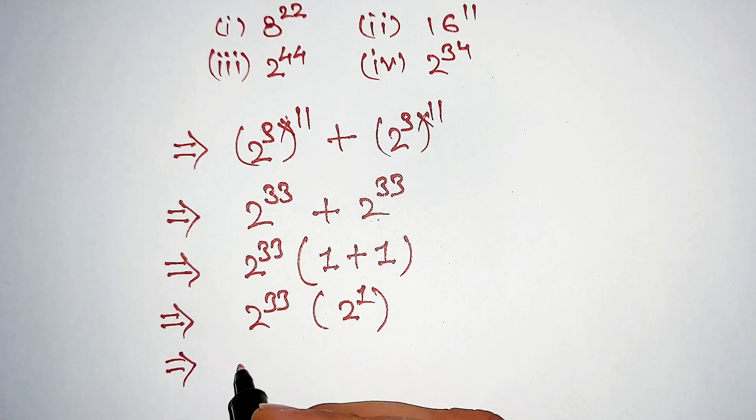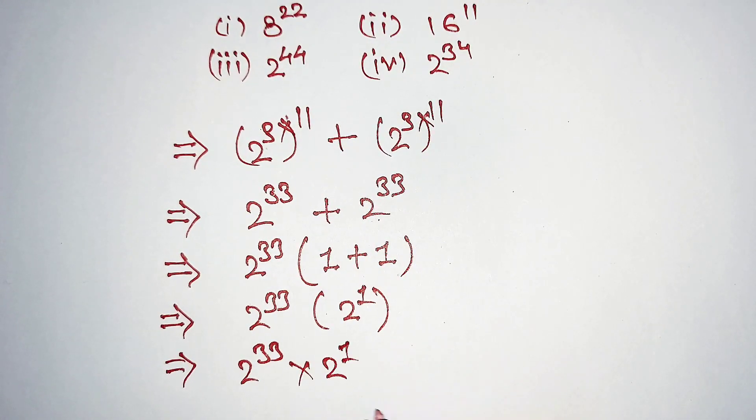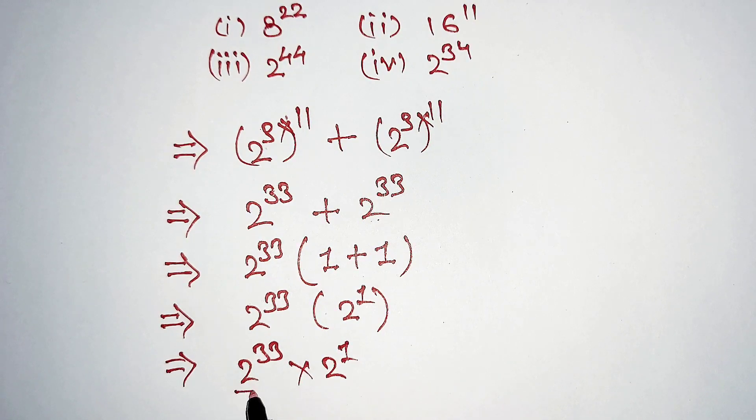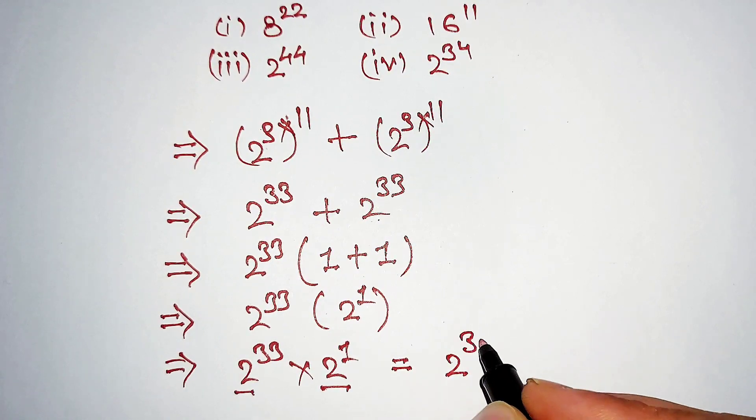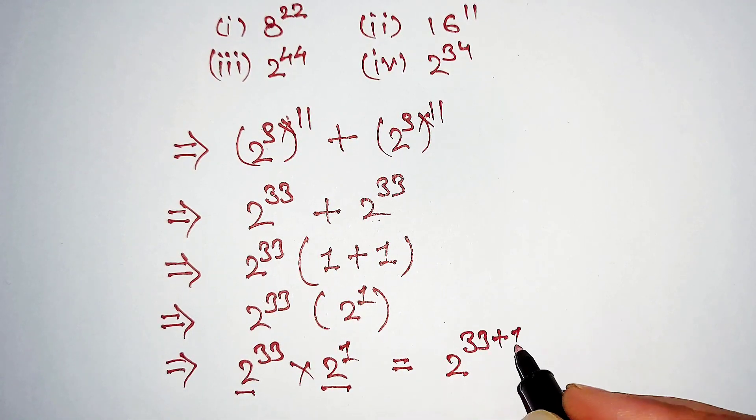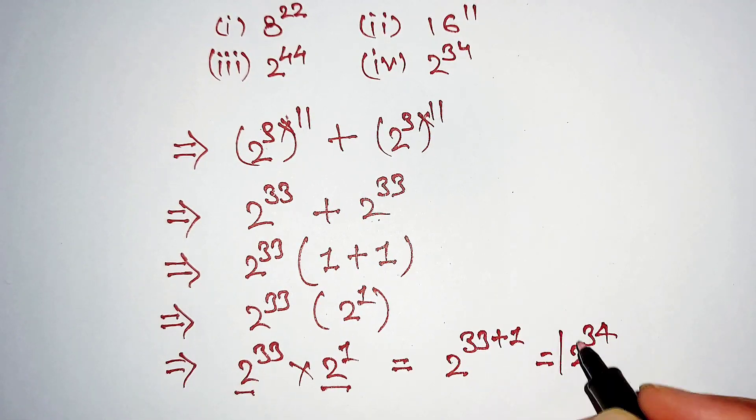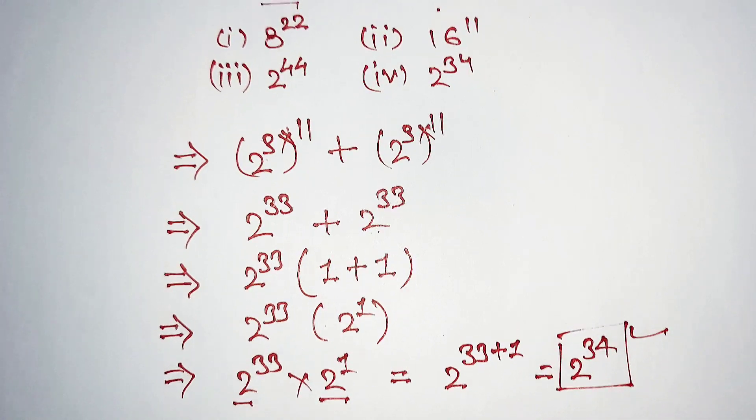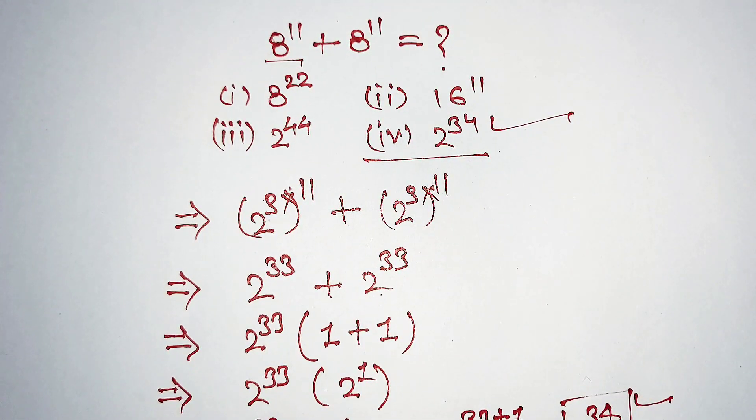Now 2 power 33 multiply 2 power 1. Here base are same, then power will be added: 2 power 33 plus 1, which is equal to 2 power 34. And that is our final answer, option 4.